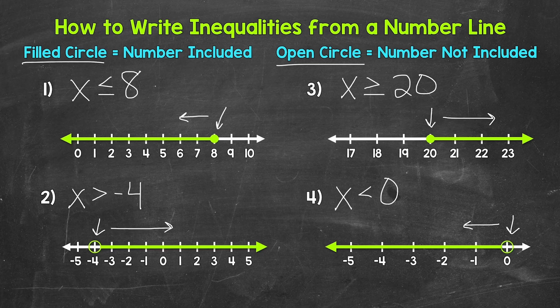So there you have it — that's how to write inequalities from a number line. Check to see if you have a filled circle or an open circle. And then check to see which direction the arrow is going: is it pointing to all of the numbers greater than whatever number you're looking at, or pointing towards all of the numbers less than whatever number you are looking at? And then you can write an inequality based on that.